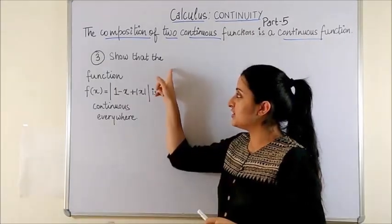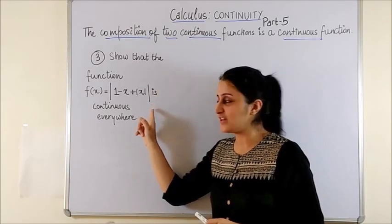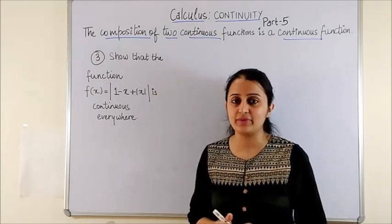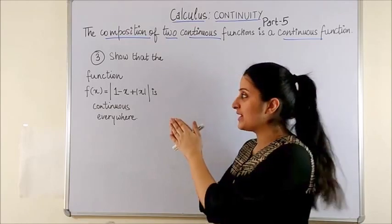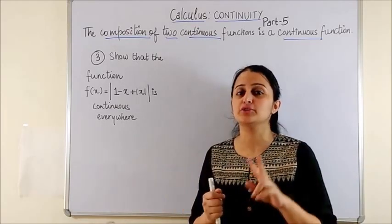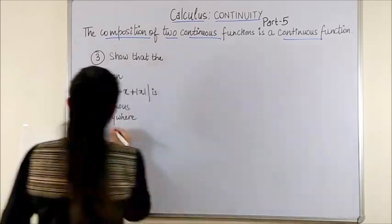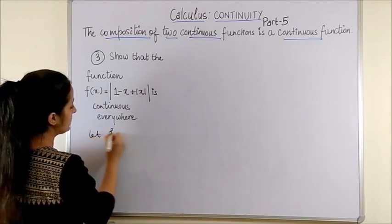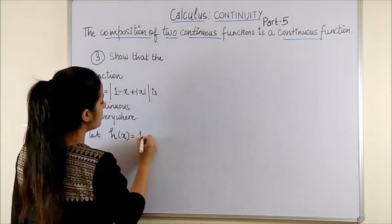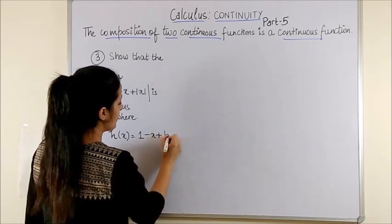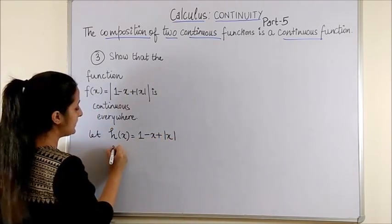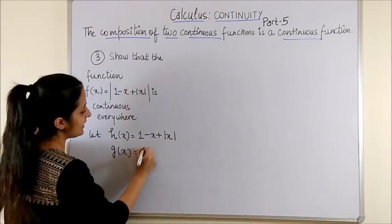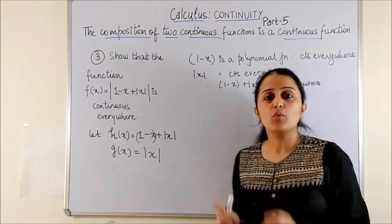For the third function here, you have to show that this function is continuous everywhere. So, let's first try to split this function into 2. Let's say the first function be 1 minus x plus mod x and let's say the second function be gx which is mod x.